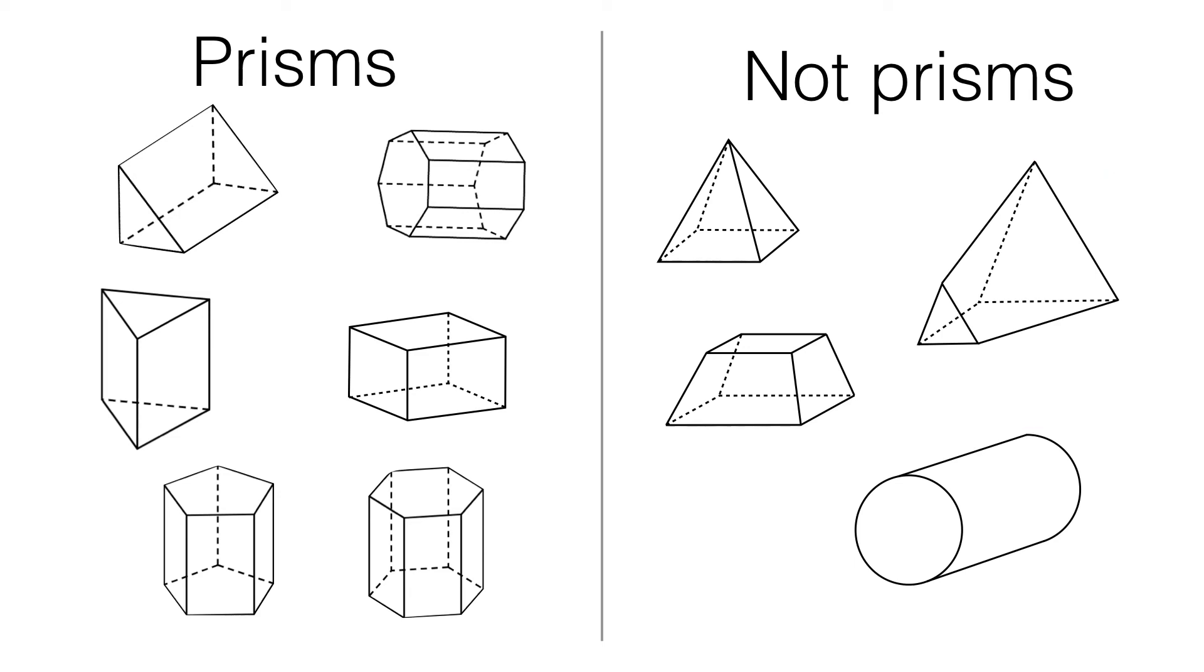However you might be thinking wait a minute, this should be a prism shouldn't it, this cylinder here? Because we could use the circle as the base and wherever you slice the cylinder, as long as it's parallel to the base, you will get an identical circle with the same cross-sectional area.